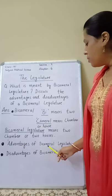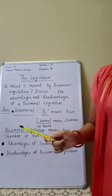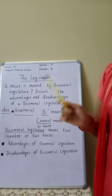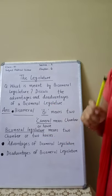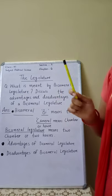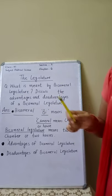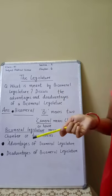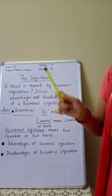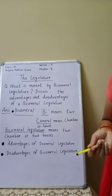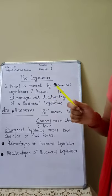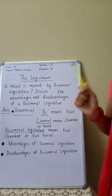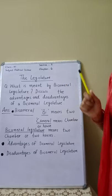Now, the advantages of bicameral legislature. First point: it prevents despotism of a single house. A bicameral legislature is a safeguard against the despotism of a single chamber legislature — if there are two houses, one can act as a check on the other. Second point: it reduces the burden of the legislature. If there is a second chamber, it reduces the burden of legislation on the first chamber.